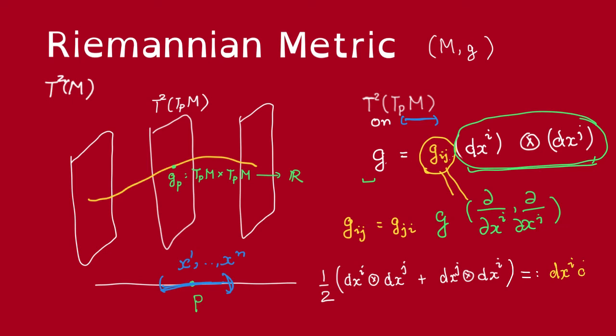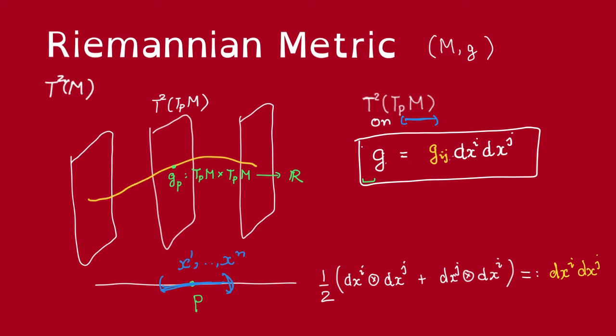Now, we write g as follows. This is how g is often given in practice. Now, note that this expression is symmetric, so we can collect terms like these and shorten them to just two times this.